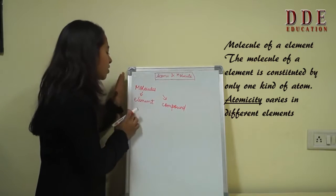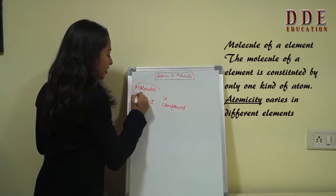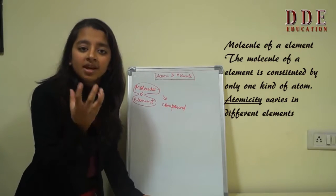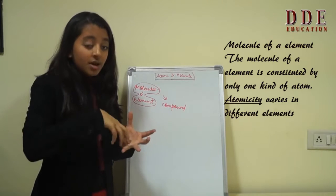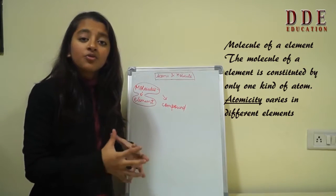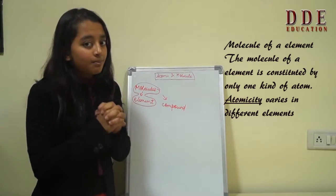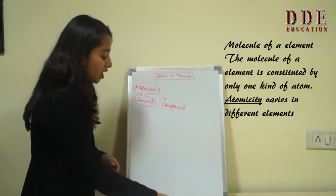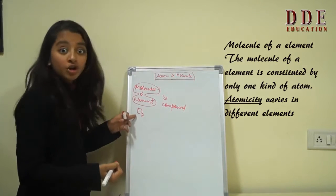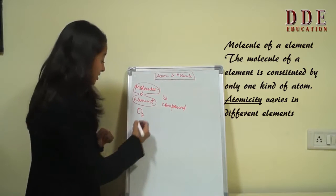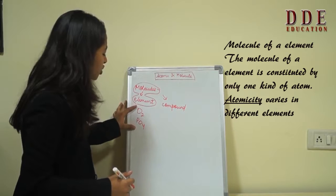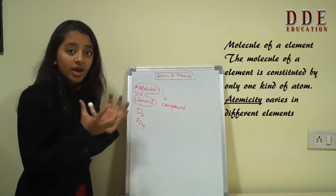So first we are going to discuss the molecule of an element. As an atom cannot exist independently it would combine with one or some more atoms to form a molecule to exist independently and be stable. Some examples of molecules are O2, that is the molecule of oxygen, and P4, phosphorus. So this is how molecules are formed of elements.